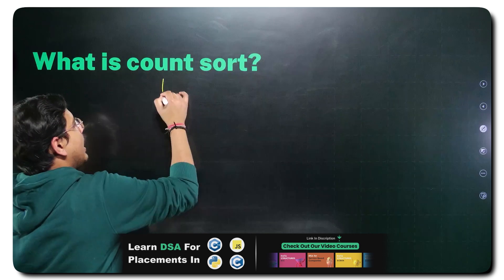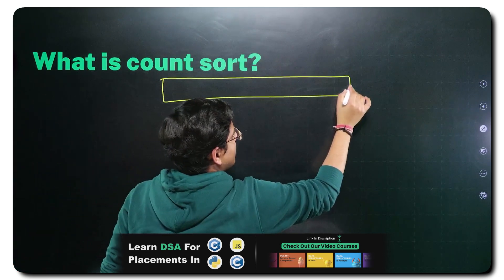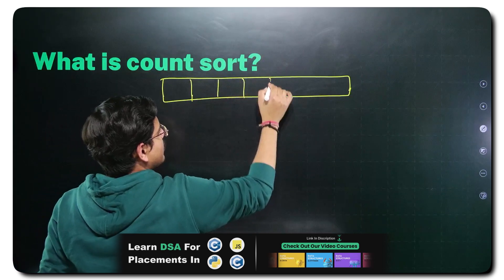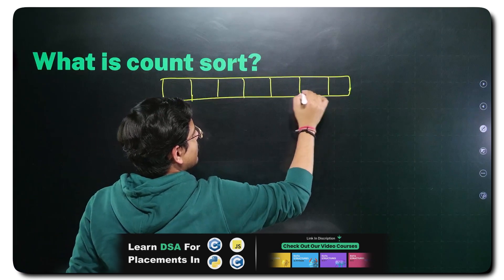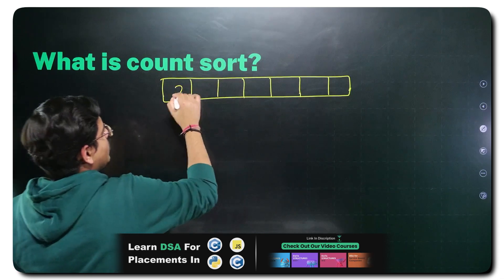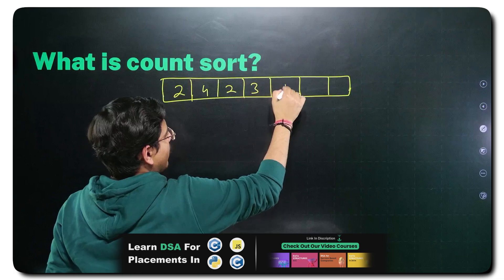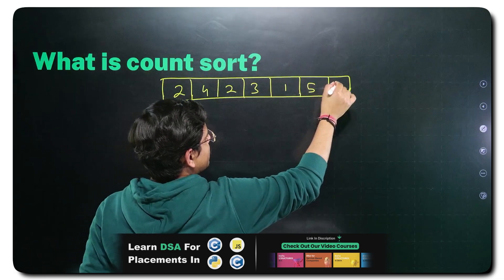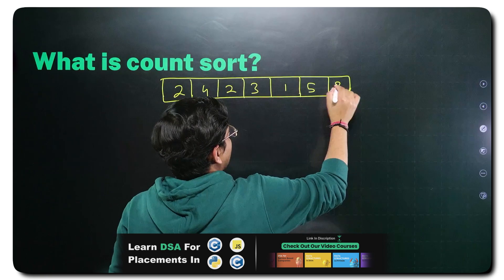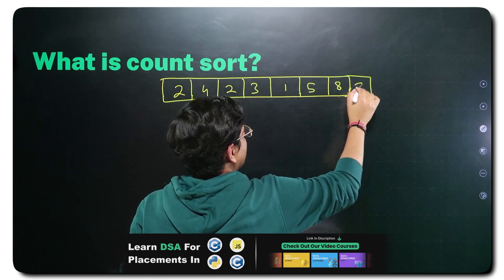I'll take an array for the example and I'll write some random values into it: 2, 4, 2, 3, 1, 5, 8, and one more element which is again 3.